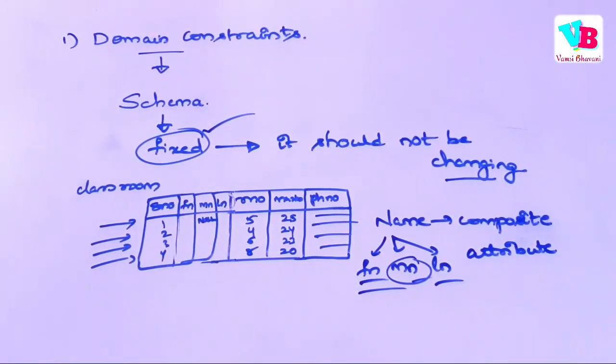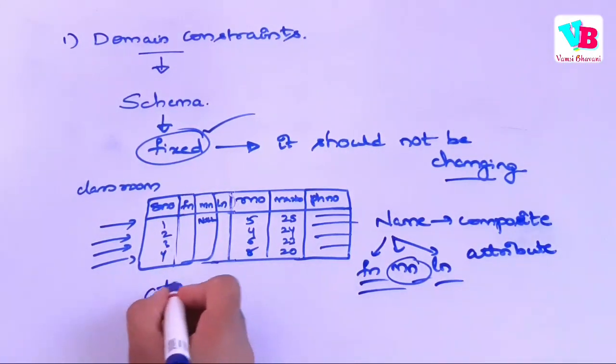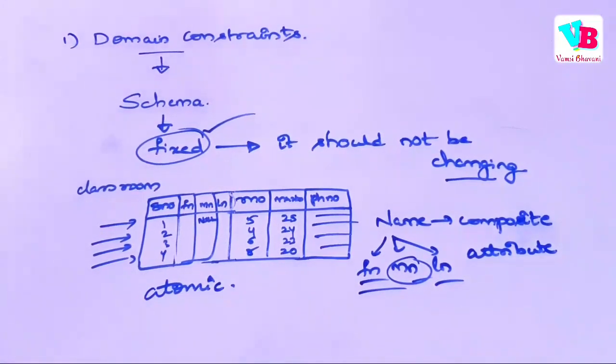So that is what domain constraints say. So domain constraints, this is basically compositeness, multi-valued attributes, the attributes can be allowed. In the schema, in the table format, all the attributes should be atomic. Atomic.